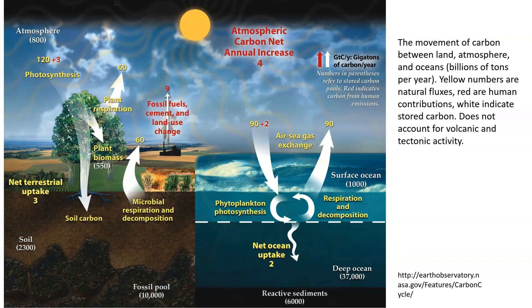Fossil fuel use, cement production, and land use change contribute nine gigatons to the atmosphere. Since you've got nine going out and five from humans coming in, that gives a net carbon increase of four gigatons per year. When we look at the carbon cycle, we can see flows through both terrestrial and oceanic environments, with some absolutely massive pools of material and annual fluxes. This is where the carbon that goes into photosynthesis comes from.